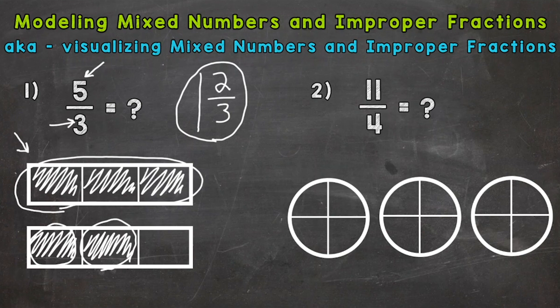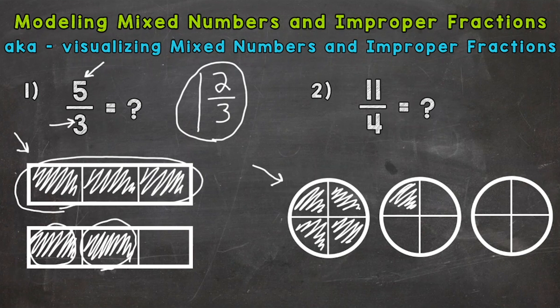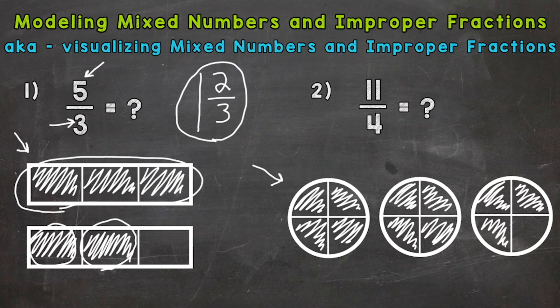Let's move to number two, where we have eleven-fourths. I have some whole circles below cut into fourths, so we need to fill in eleven-fourths. One-fourth, two-fourths, three-fourths, four-fourths — four out of four is equal to one whole. Five-fourths, six-fourths, seven-fourths, eight-fourths — equivalent to two wholes. Nine-fourths, ten-fourths, and eleven-fourths. So that model represents eleven-fourths.